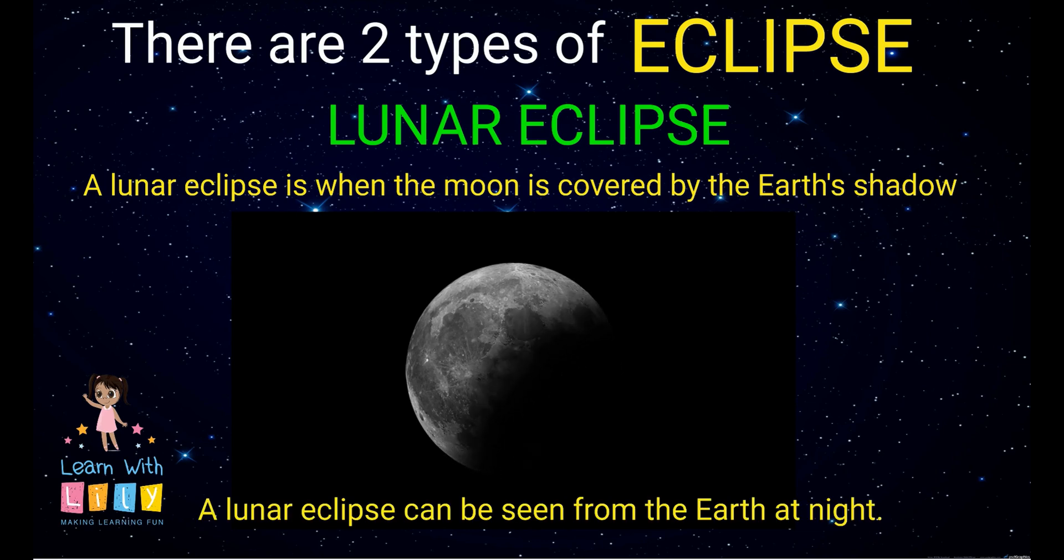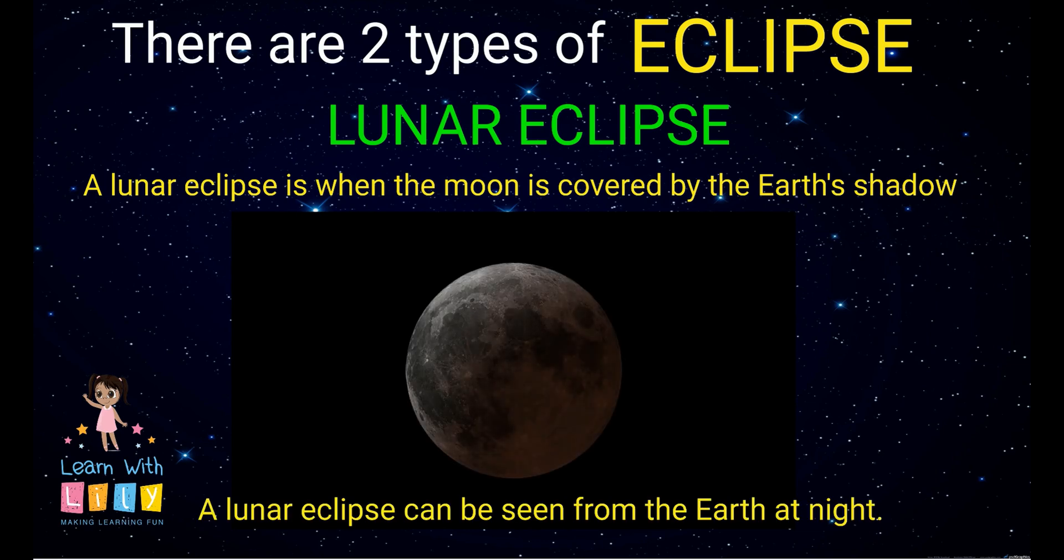So a lunar eclipse is when the Moon is covered by the Earth's shadow. That's right! A lunar eclipse can be seen from the Earth at night.